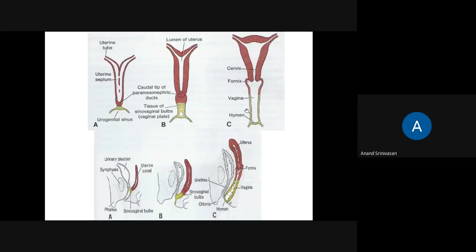Here you can see the uterine canal and the sinovaginal bulb opening into the urogenital sinus. In the coronal and sagittal sections, the sinovaginal bulb forms the lower two-thirds of the vagina, while the paramesonephric duct proliferation forms the upper one-third and the fornices around the cervix. The opening is initially protected by the hymen.